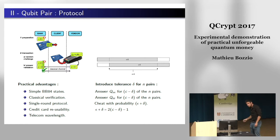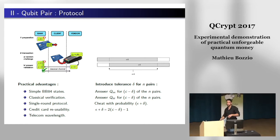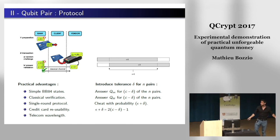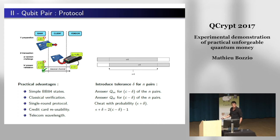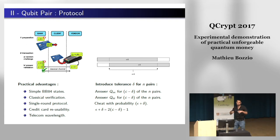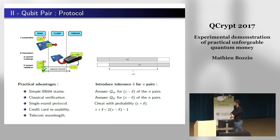The protocol has several advantages: it uses simple BB84 states, there is classical verification so you don't send the quantum state to the bank, it is a single-round protocol, and you have credit card reusability — if you select only a few states for verification you can reuse the unmeasured states for future verifications. We implement it at telecom wavelength.